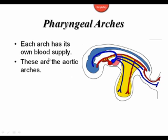Each arch has its own blood supply; they're called the aortic arches. There are six aortic arches, even though there are only four pharyngeal arches. What happens around the region of the fourth and sixth arch is fairly confusing, and so while we'll talk about a sixth aortic arch, we'll combine that tissue with the fourth arch tissue when we talk about development of the pharyngeal arches.